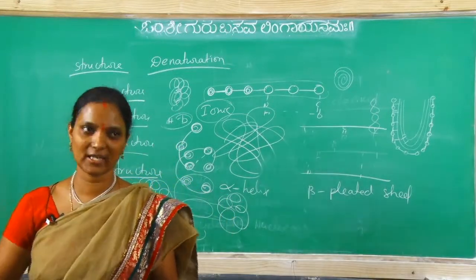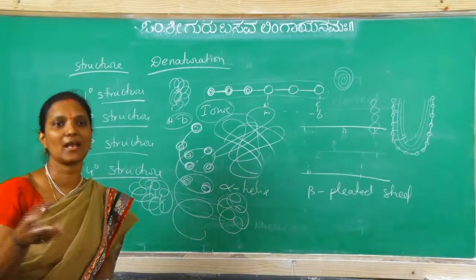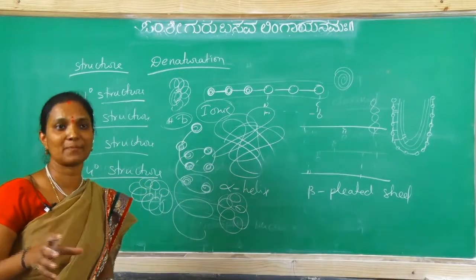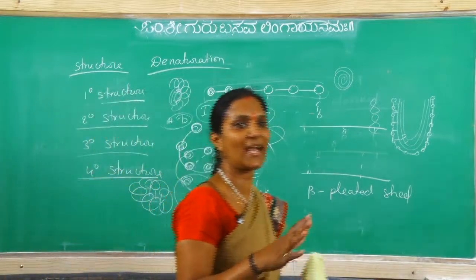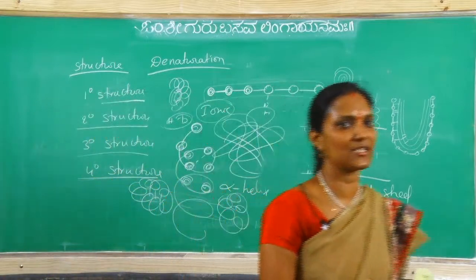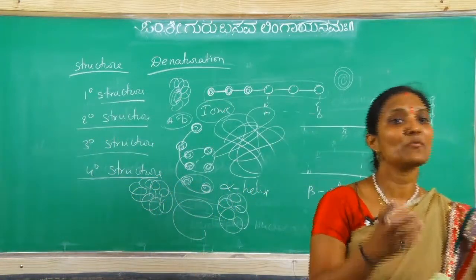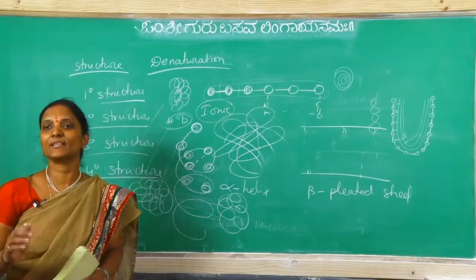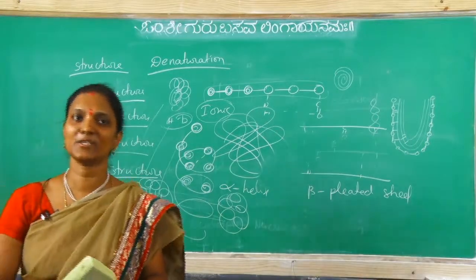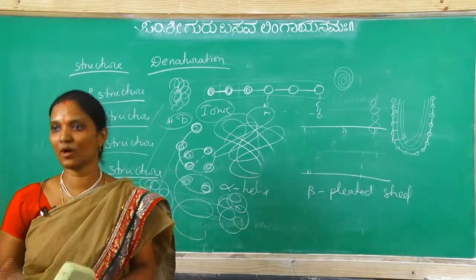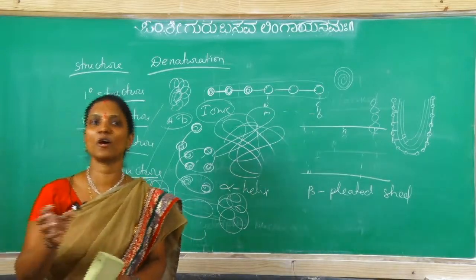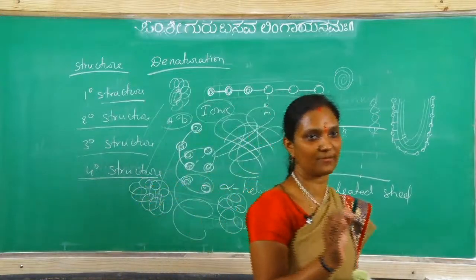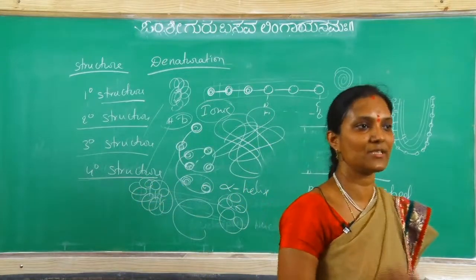So proteins on heating, or excess cooling, or any acid, base, or impurity added - what happens? This protein loses its activity. That process name is denaturation. Denaturation means proteins on heating or by addition of acid or base lose their activity.